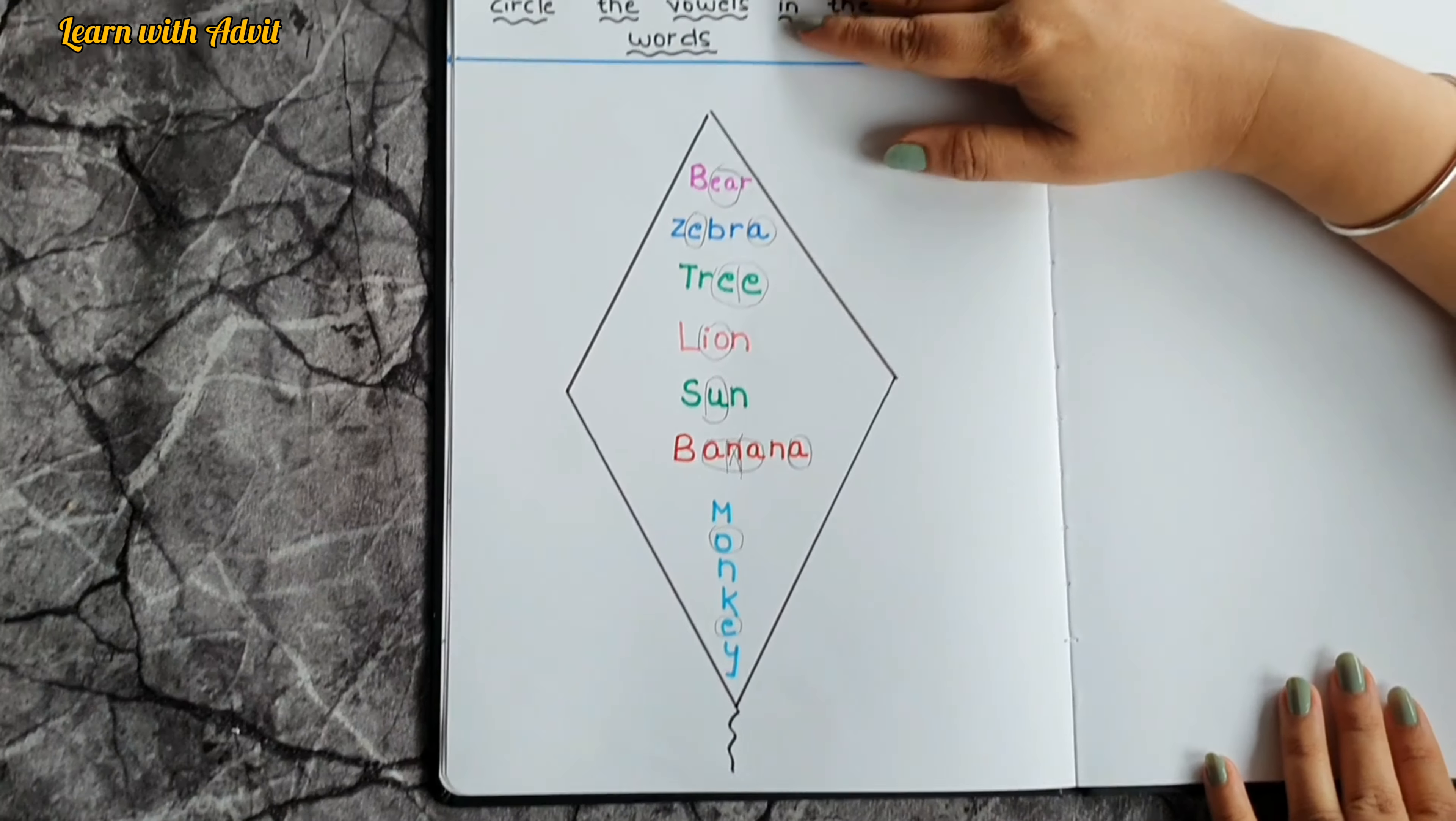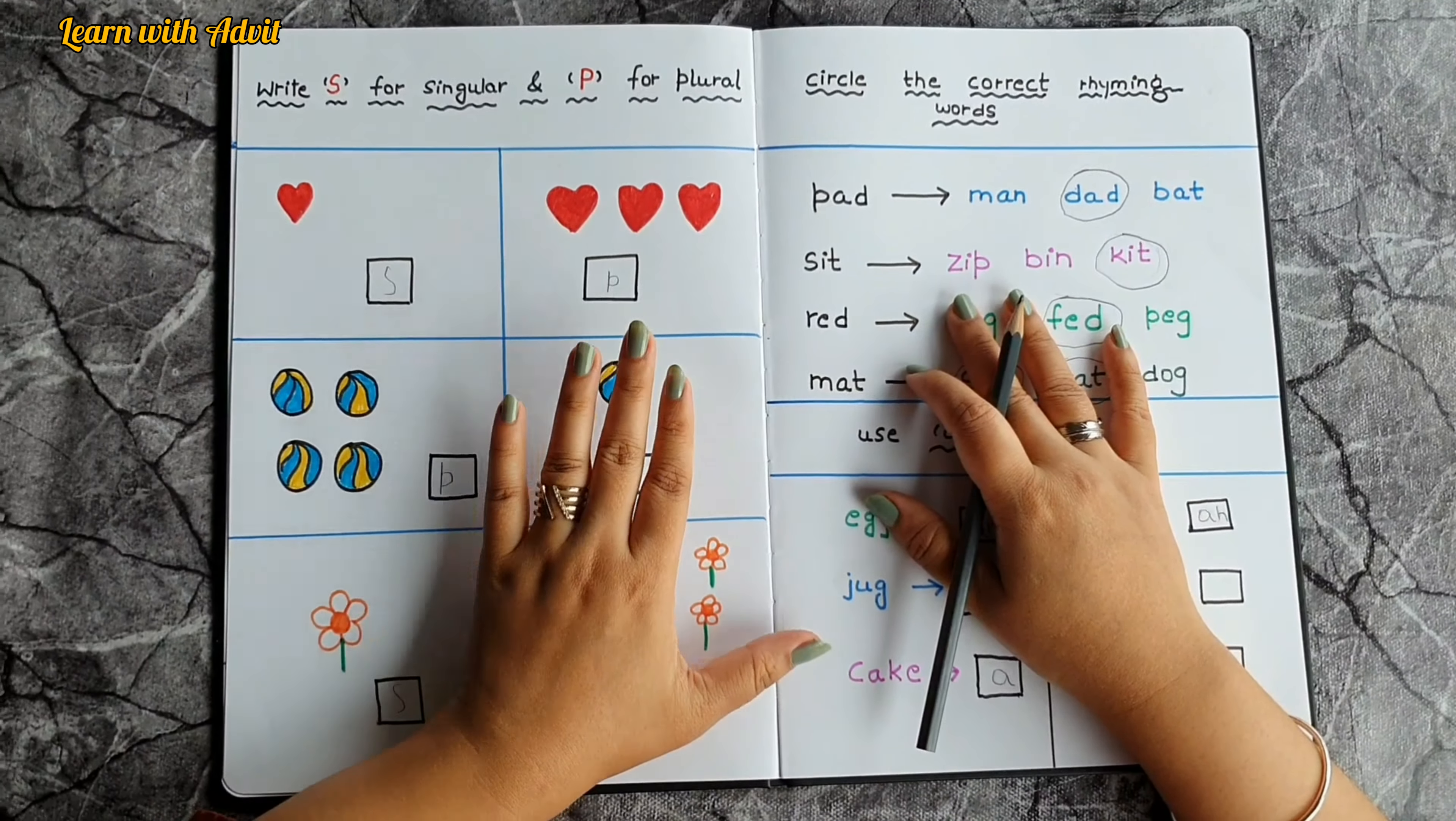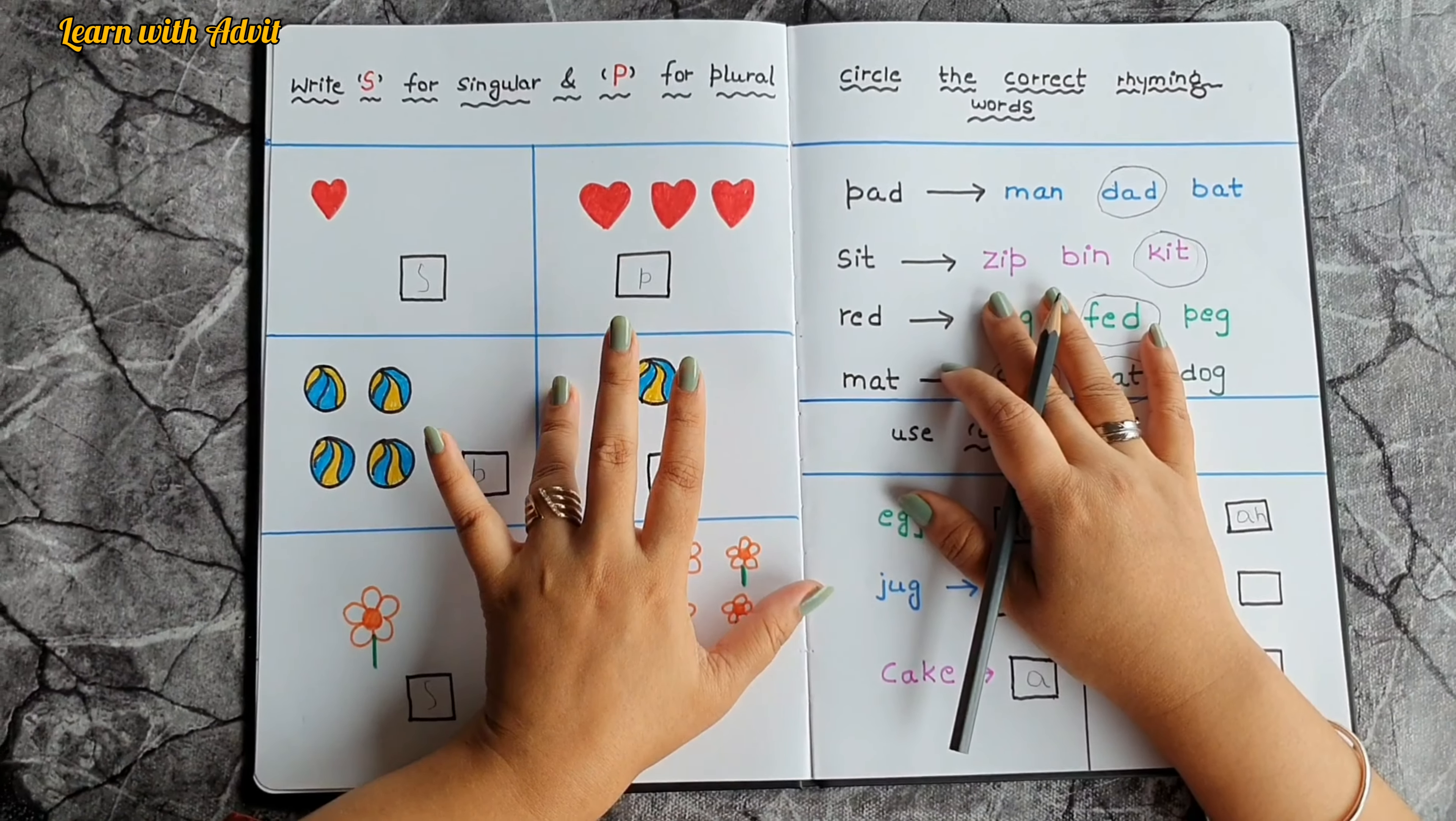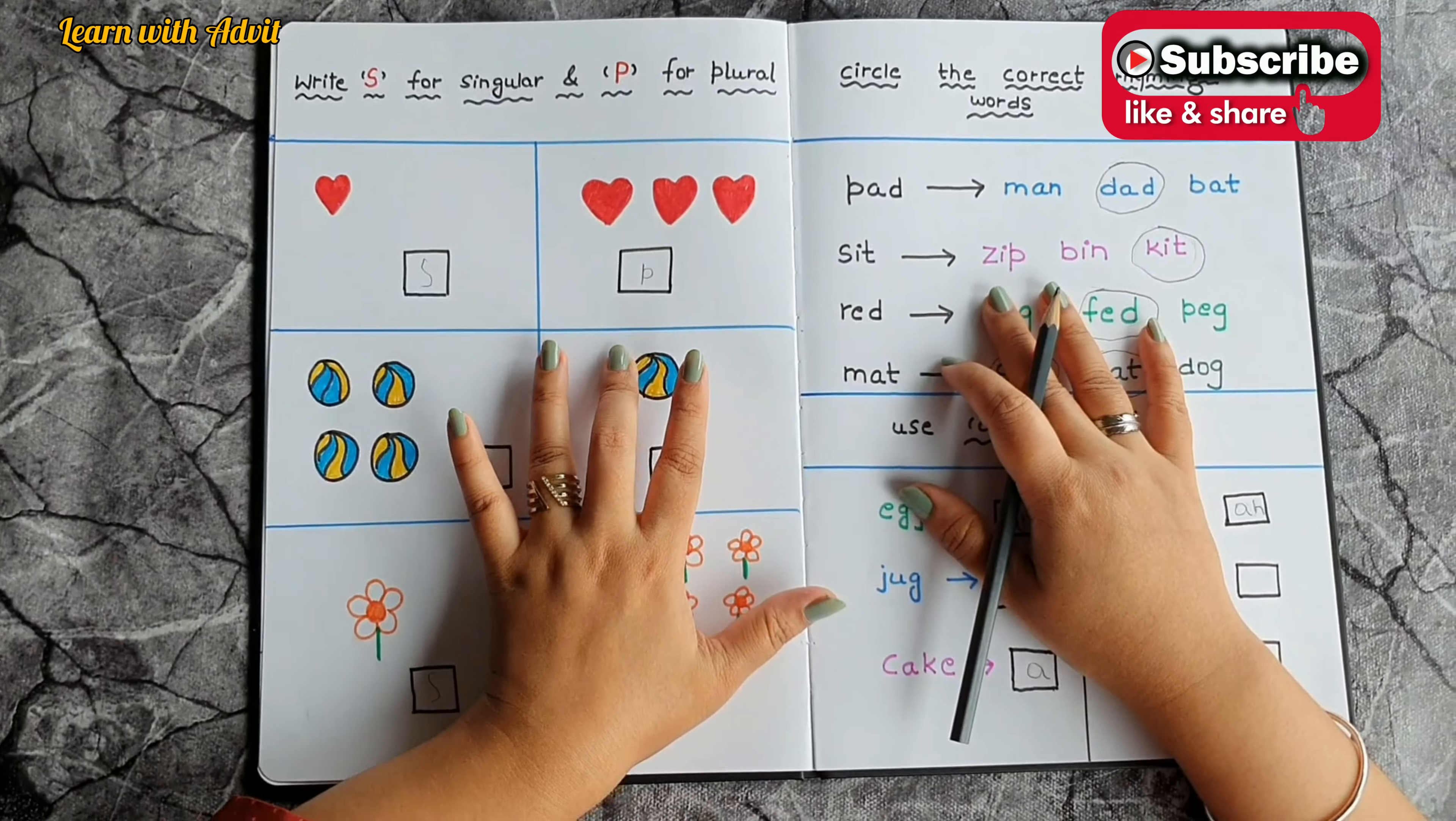I hope you like this worksheet covered all the topics of this and that, 'a' and 'an' concept, singular plural, rhyming words and phonic sound. If you want to do this worksheet with your kids I will provide PDF link in description below. For more such learning videos please like share and subscribe to our channel Learn with Advit. See you next time, bye bye, thanks for watching.